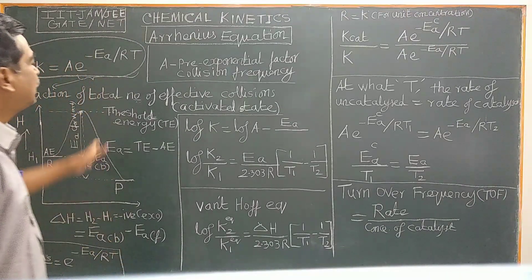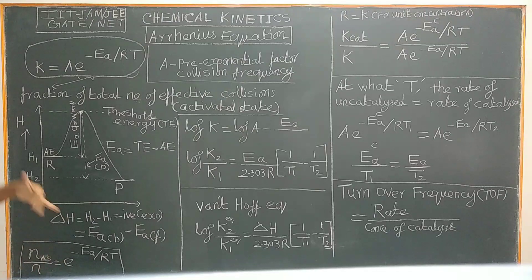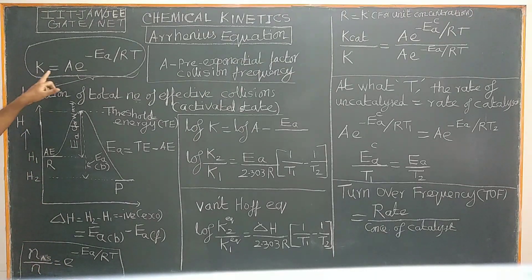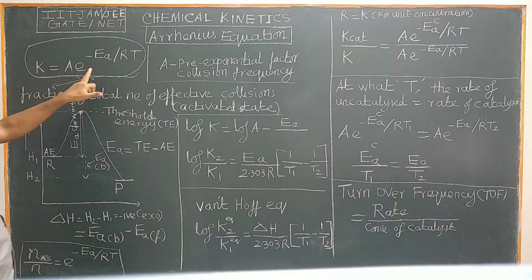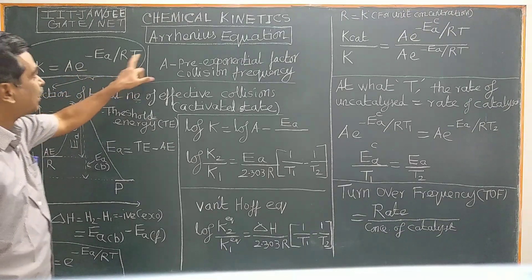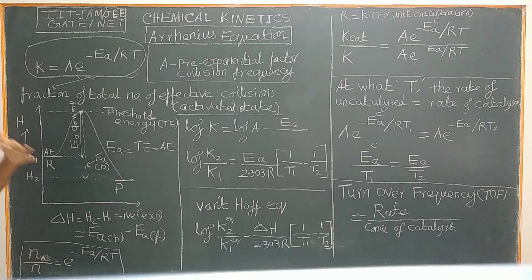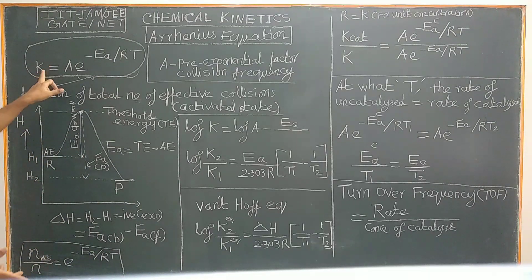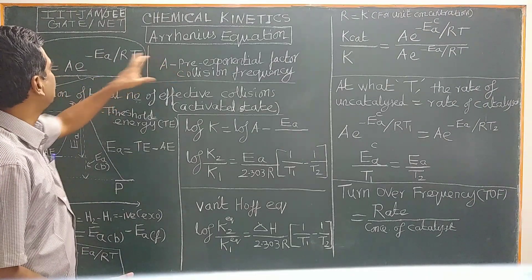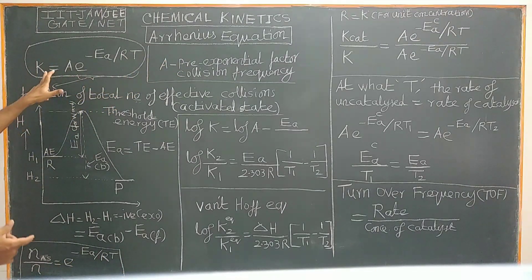Now we will see what is the Arrhenius equation. The effect of temperature on the rate constant is given by the Arrhenius equation. This effect was studied by Arrhenius, who proposed the equation called the Arrhenius equation.